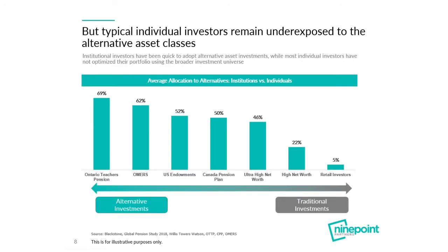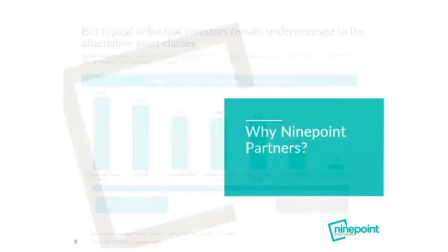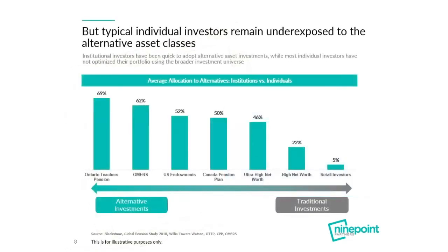Slide eight demonstrates why Nine Point is working towards adding these strategies to your portfolio. Based on data collected, typical retail investors are only about 5% allocated to alternative investments. But institutional money managers, including pensions and endowments, have moved upwards of 50% of their portfolio to alternative investments. There is a tremendous amount of room for the average retail client to add these strategies to their portfolio and improve their overall expected risk-return profile.